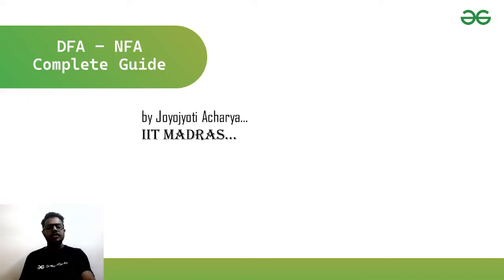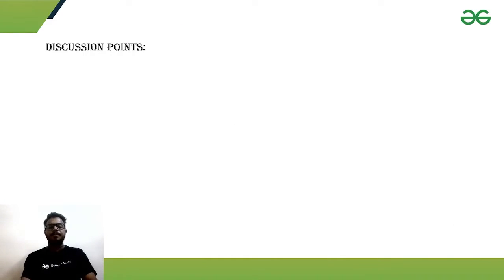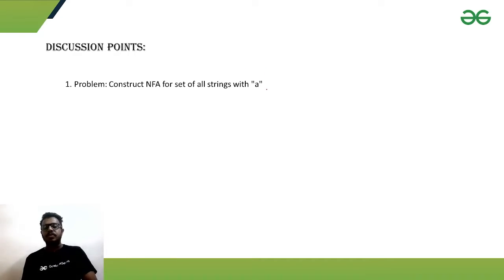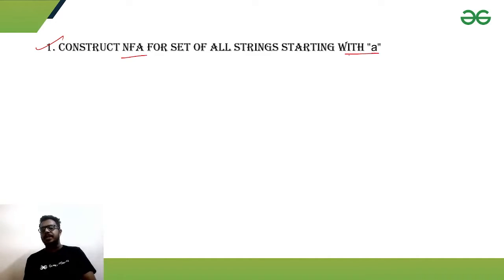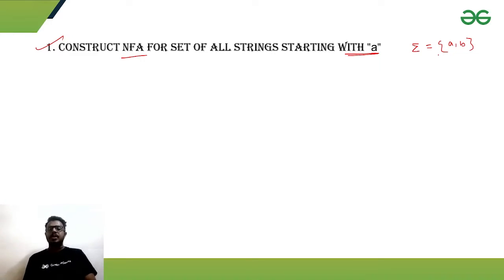Welcome to GeeksForGeeks. In today's discussion we will be constructing NFA for given languages. The first question is: construct an NFA for the set of all strings starting with 'a'. Our alphabet has only two symbols, small 'a' and small 'b'. We have already seen this example for DFA, now let's check what happens in the case of NFA.